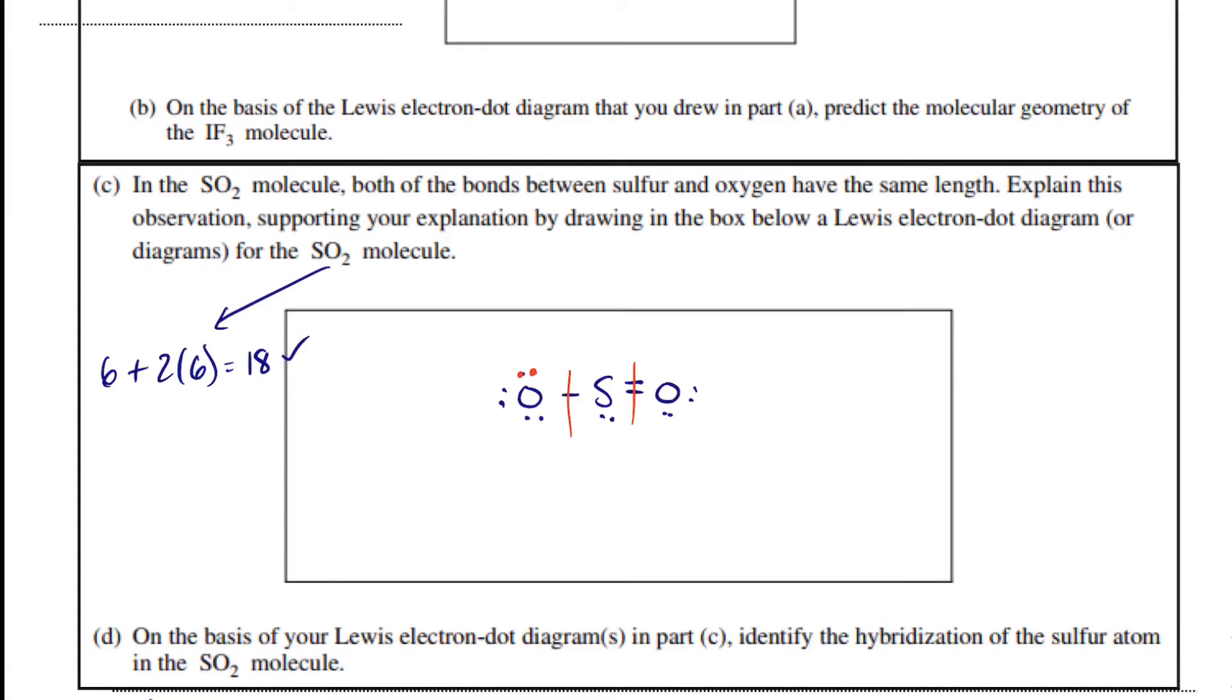But when we count here, 1, 2, 3, 4, 5, 6, 7, it's got 7, so that would be a minus 1 formal charge. Sulfur should have 6 valence electrons, but when I count, I get 1, 2, 3, 4, 5, so that'll be a plus 1 formal charge.